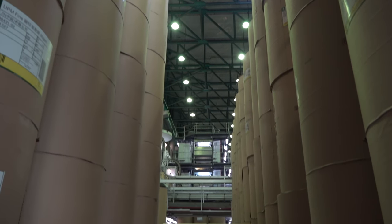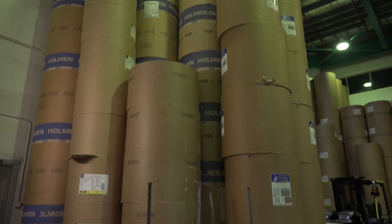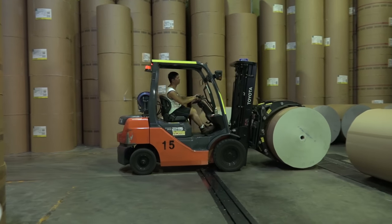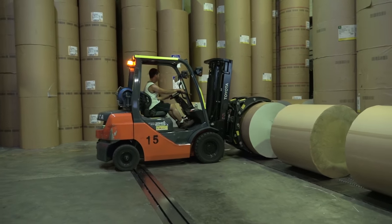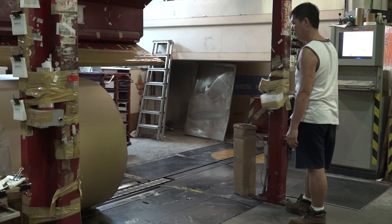Newsprint paper comes in giant paper rolls that weigh up to 3,000 kilograms each. A specialized forklift moves the paper roll onto tracks which move it around the storage area.